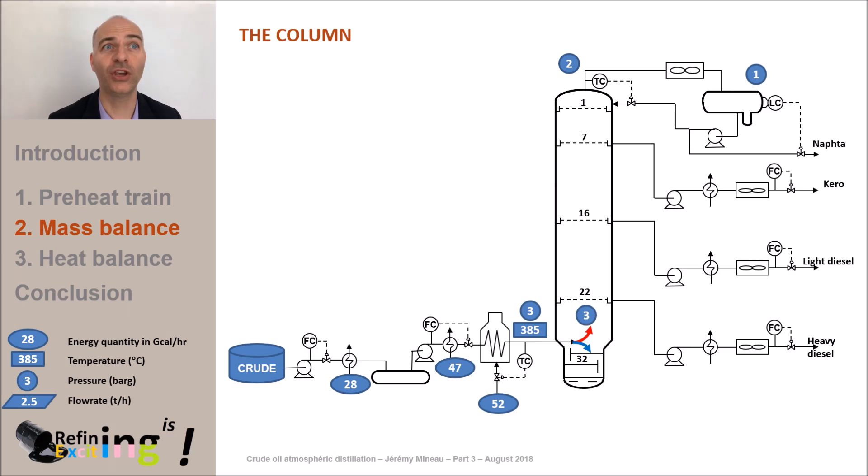The mixture of molecules in liquid plus gas form enters the flash zone of the atmospheric distillation column. The vaporized molecules rise in the tower whereas the molecules in liquid form will naturally go towards the bottom of the column. The feed tray will be tray 27. In other words, the feed arriving in liquid plus gas form enters the tower between tray 26 and tray 27.